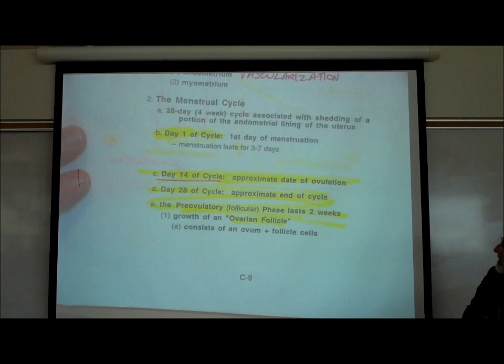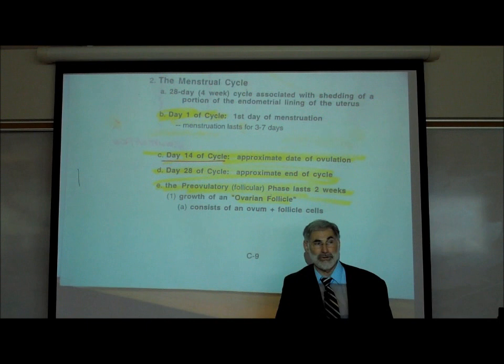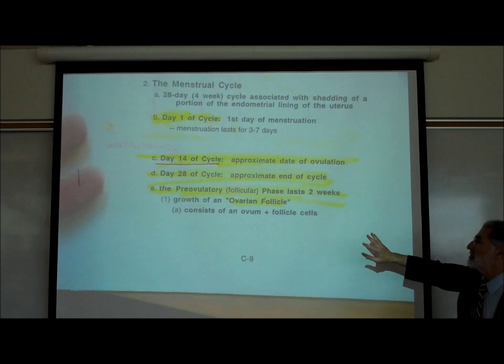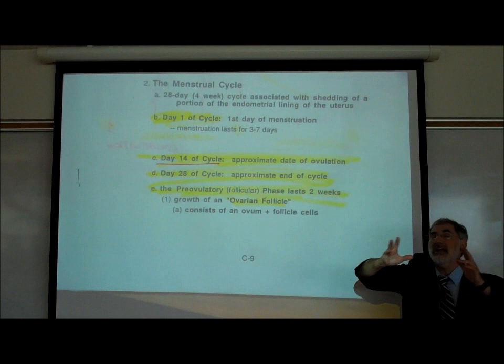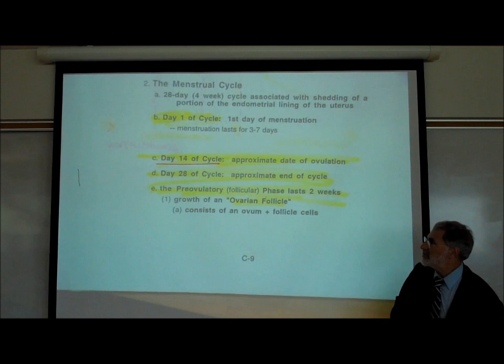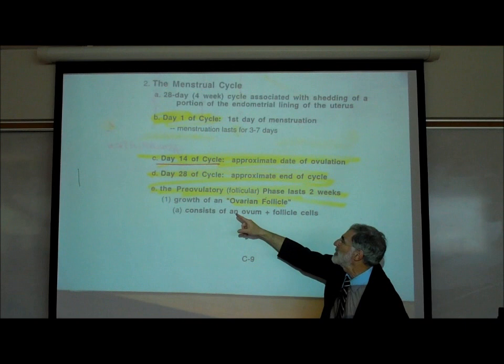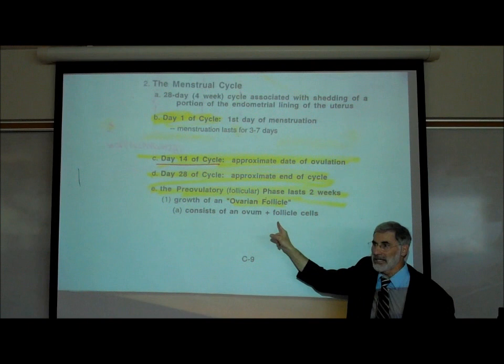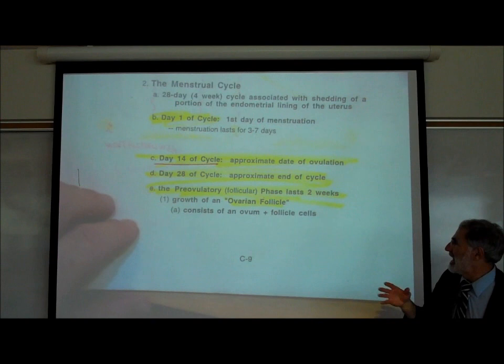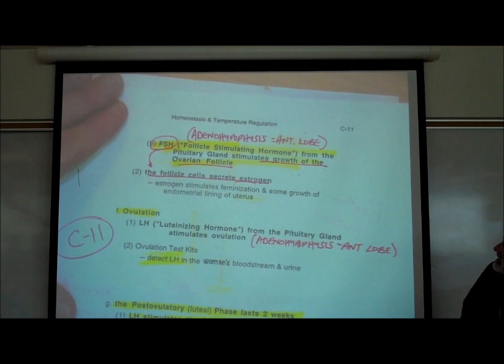Day 28 is the approximate end of the cycle — could be day 30, 32, or 23. The two weeks between day one and ovulation are called the pre-ovulatory, or follicular phase — because what happens during the first two weeks is the growth of an ovarian follicle. The follicle is an egg surrounded by follicle cells. It is FSH that causes the growth of the ovarian follicle and causes the follicle cells to secrete estrogen.